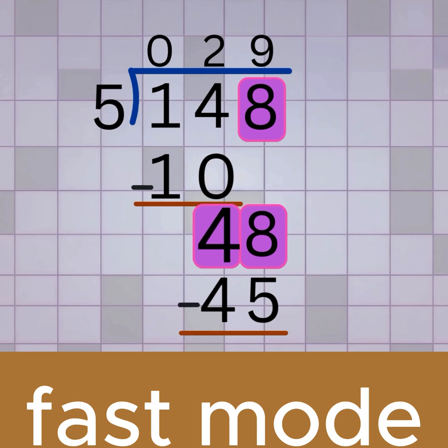Subtract, 48 minus 45 equals 3. Now we're out of digits, and we have 3 left over.